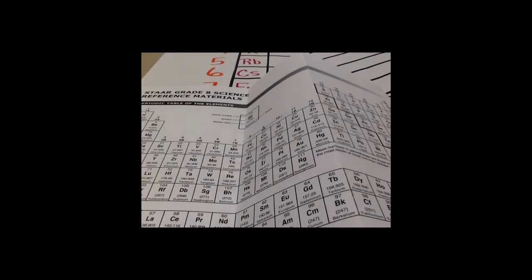At this point, you're asking yourself: do I really have to draw an atom every time I want to find my protons, electrons, and neutrons, my valence electrons, and how many shells an atom has? No, you do not. All this information can come from your periodic table.